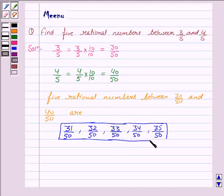And we know that 3 by 5 is same as 30 by 50 and 4 by 5 is same as 40 by 50. So this completes the question.